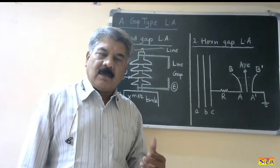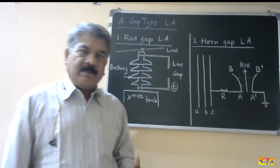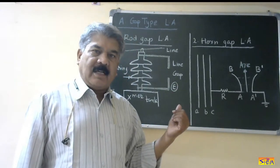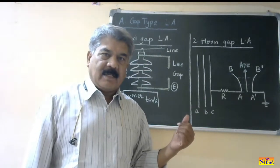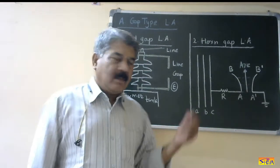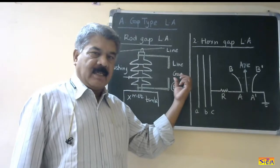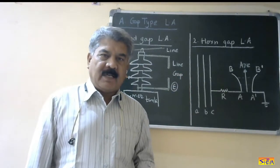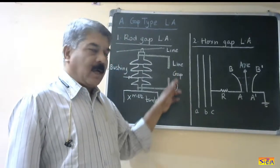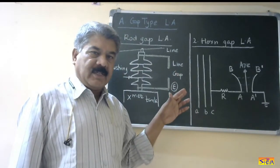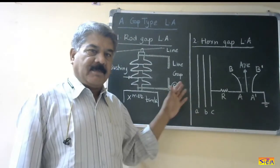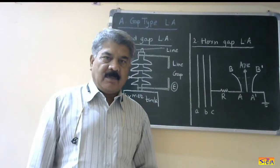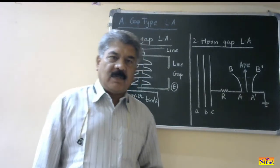Because the follow current flows for a long time, the relay may sense this as a line-to-ground fault and it may trip the circuit breaker. Drawback number three: the insulating medium is air, and the breakdown properties of air are affected by atmospheric conditions. Therefore, the sparkover voltage here is affected by atmospheric conditions.